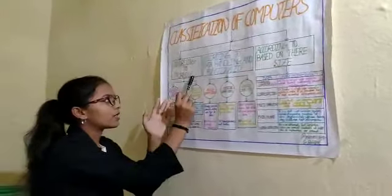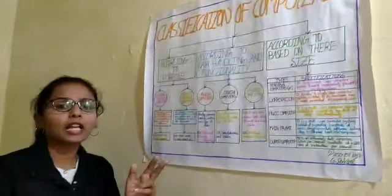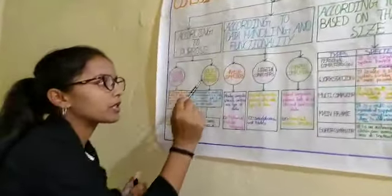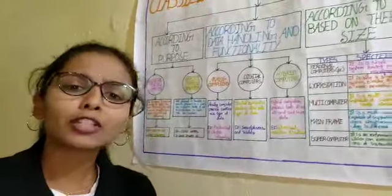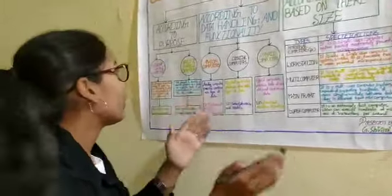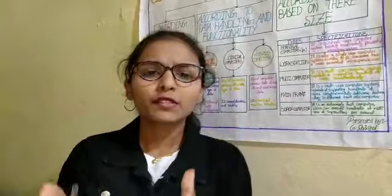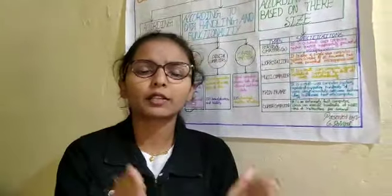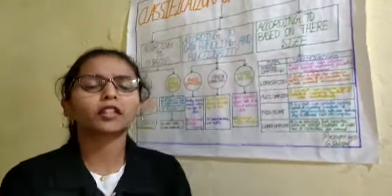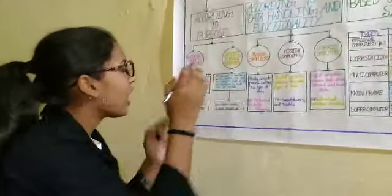According to purpose, computers are again mainly classified into general purpose computers and specific purpose computers. I think you all have understood from the name itself — specific means particular. You can identify a particular person, particular thing, and so on — that is known as specific.